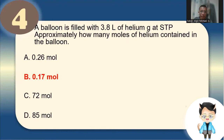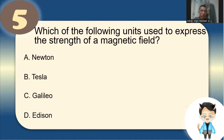Number 5: Which of the following units is used to express the strength of a magnetic field? The unit is Tesla. Tesla is to magnetic field as Newton is to force. Galileo and Edison are scientists, not units.